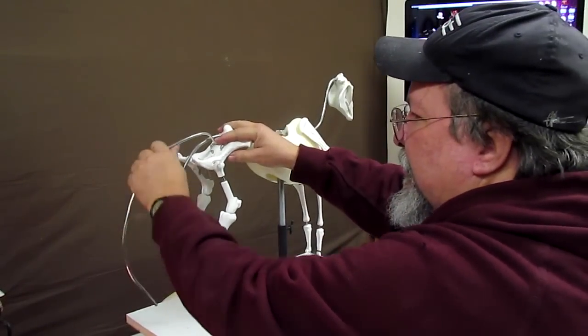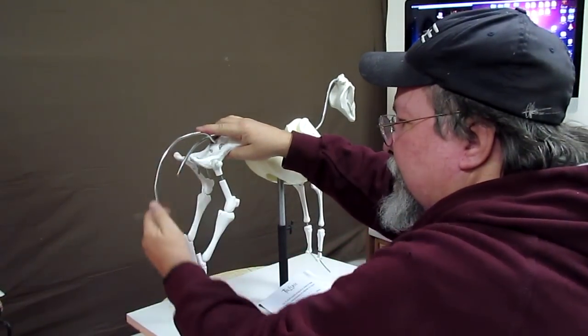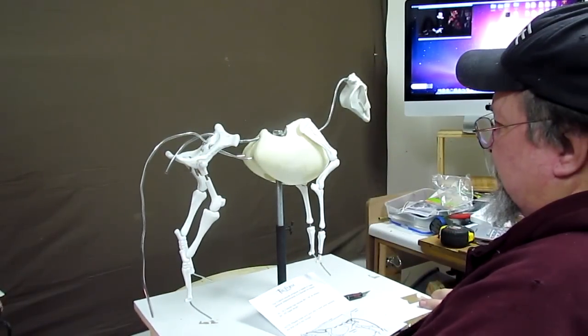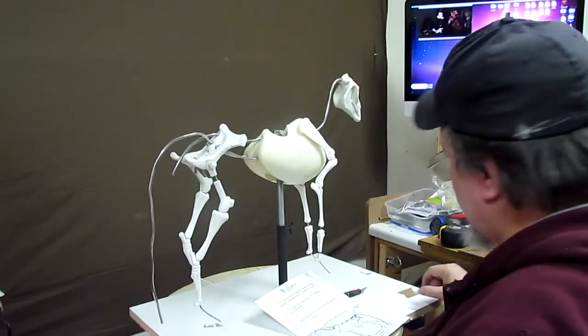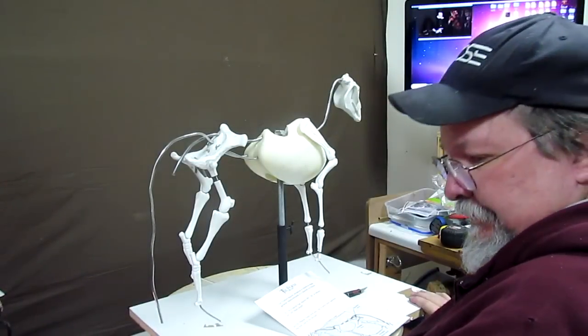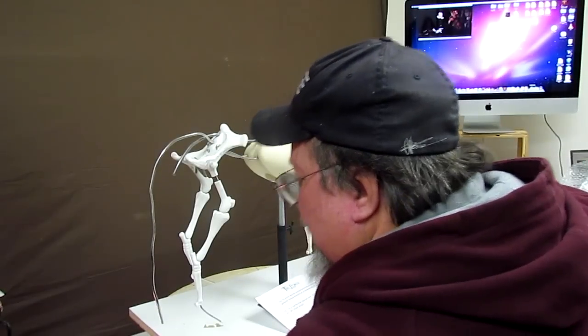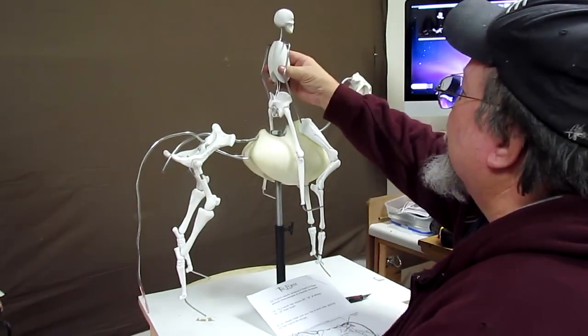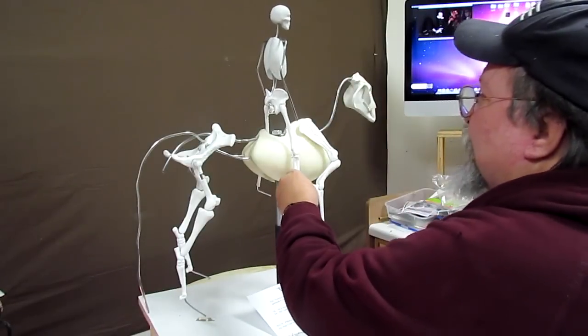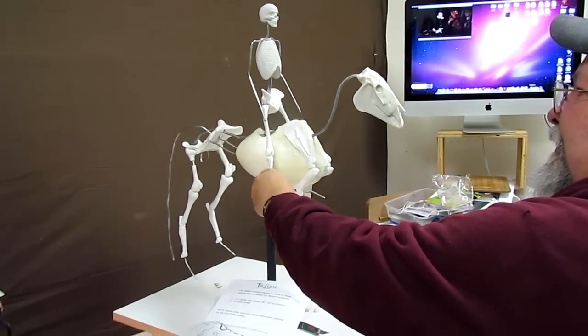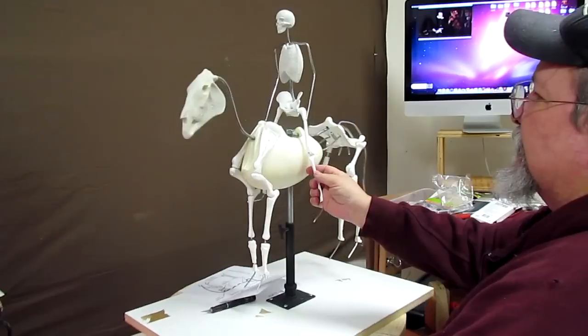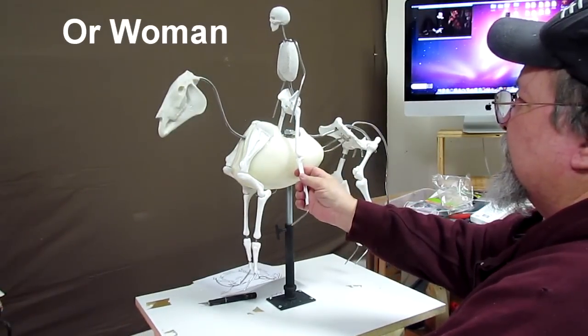This here is the tail armature. And so, now let's see how the figure, wherever I put the figure. Oh, there it is. We'll look on the back of the horse. Oh, perfect. See? Just perfect. But that's how this will look with the armature of the man and the horse.